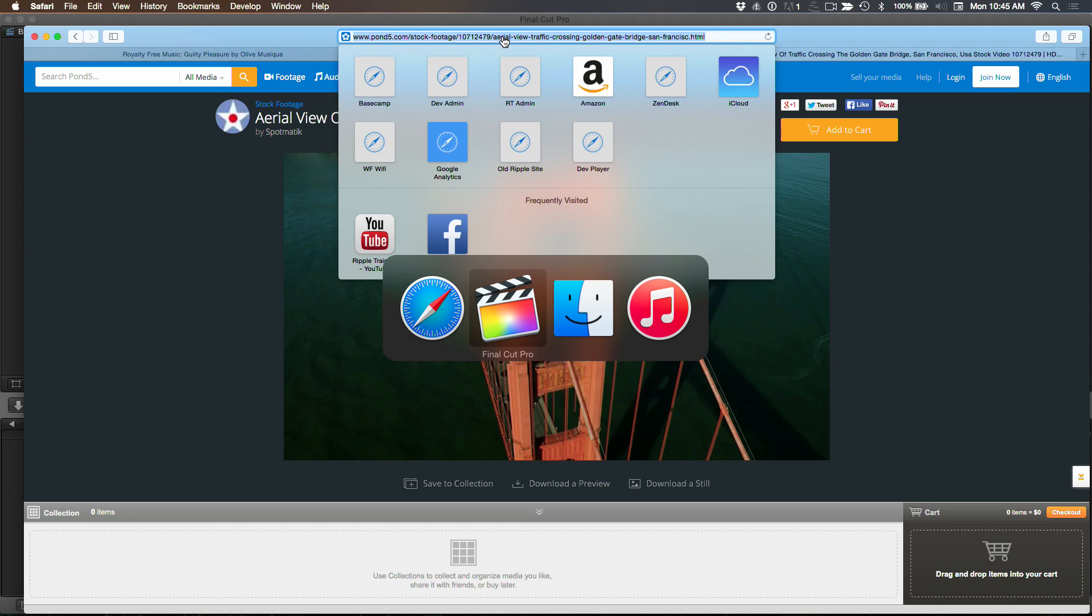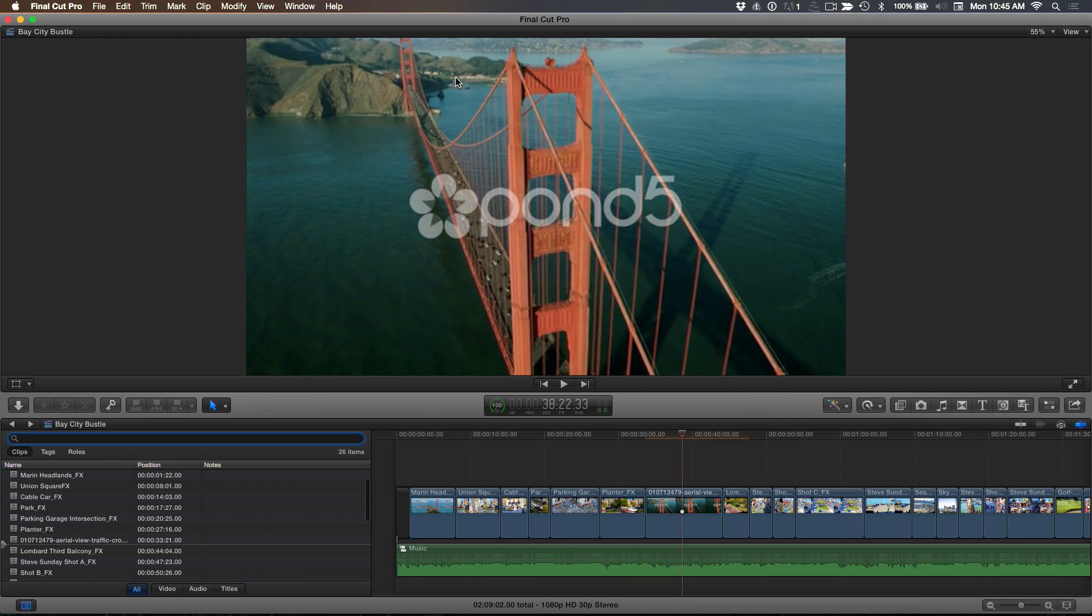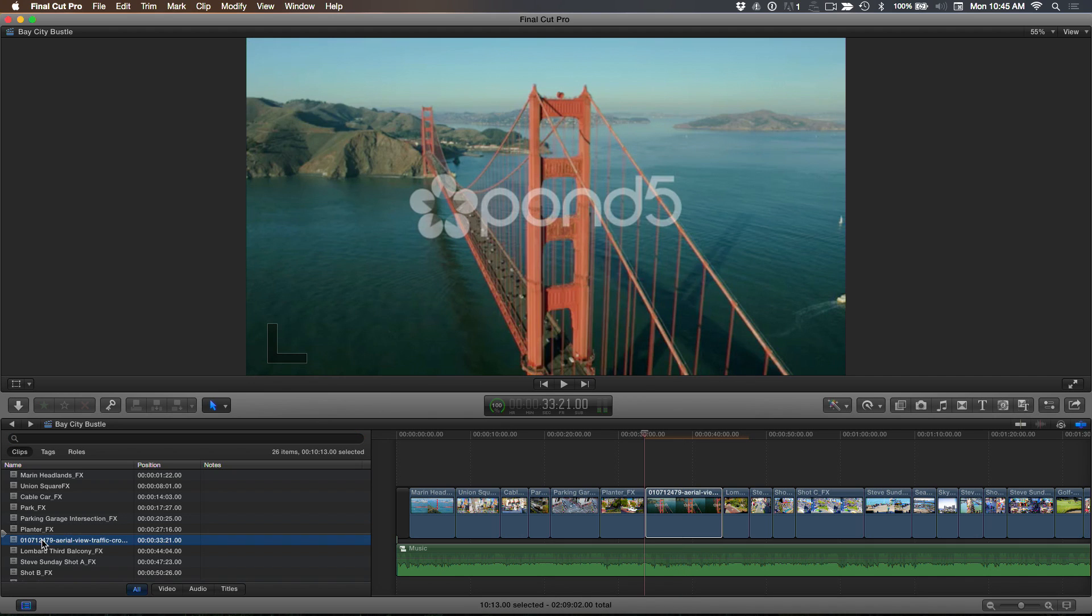Right. So now I'm going to go back to Final Cut Pro. And I'm going to open that timeline index, Command Shift 2. And I'm parked right over the clip. And so that the timeline index knows that that's the clip. Now, I'm going to double click in the notes field. And you asked me, why did I make this timeline index so big? Well, here's why. Because I can now paste that URL right in the timeline index.